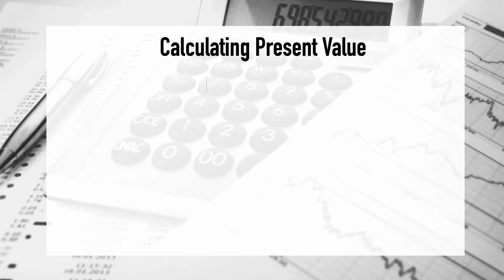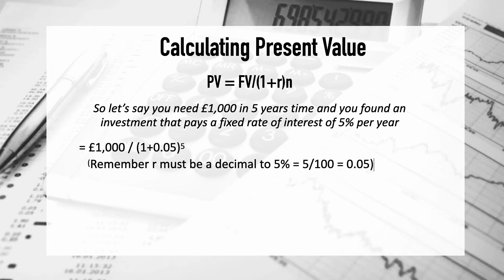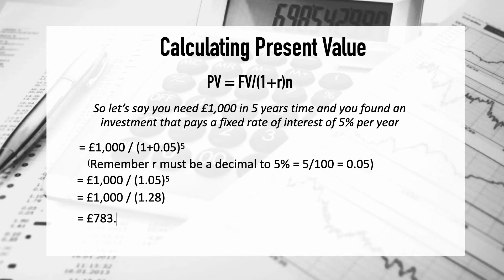Moving on, we're calculating the present value — how much do you need to invest today to have a certain amount in the future? In this example, we need £1,000 in five years' time and you find an investment paying a fixed interest rate of 5% per annum. All we do is switch around the formula slightly, pop in all the figures, and remember to always calculate the brackets first. The answer is £783.53.